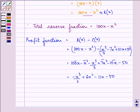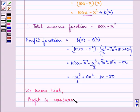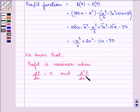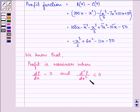We need to find out the number of items when the profit will be maximum. We know that profit is maximum when the first derivative of the profit function with respect to x is equal to 0, and the second derivative is less than 0. So let us find the first derivative equated to 0, find the value of x, then substitute into the second derivative to verify.